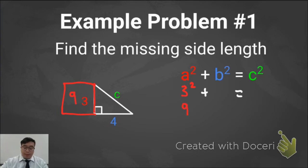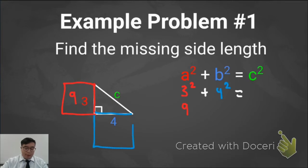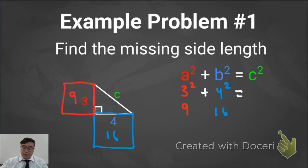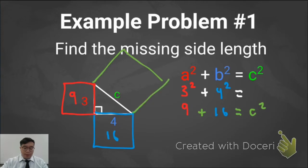Now let's take a look at side B. Side B has a length of 4, and if I square this side — the area of this square — 4 squared, or 4 times 4, is going to be 16. The Pythagorean Theorem says if I combine these two smaller squares, they should have the same area as C squared. So 9 plus 16 is going to be 25.